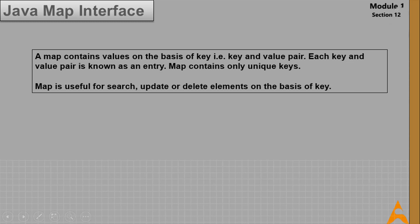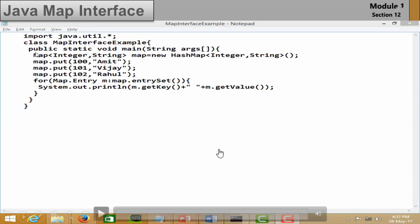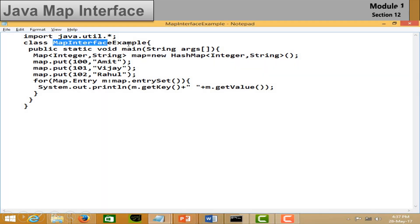Now let's discuss the Java Map interface. A Map contains values based on a key — that is, key-value pairs. Each key-value pair is known as an entry. Map contains only unique keys and is useful for searching, updating, or deleting elements based on a key. Entry is the sub-interface of Map, accessed as Map.Entry. It provides methods to get key and value, and returns key-value pairs.